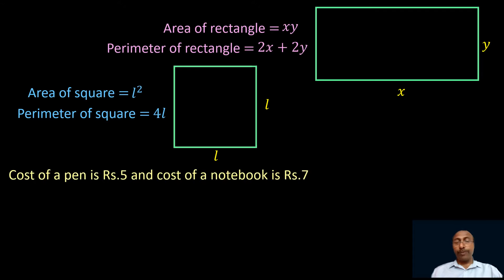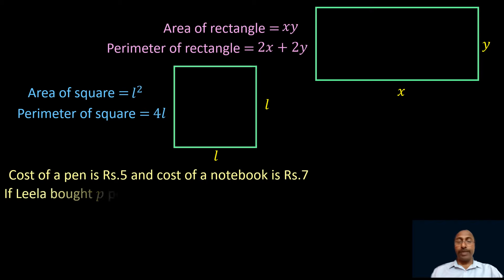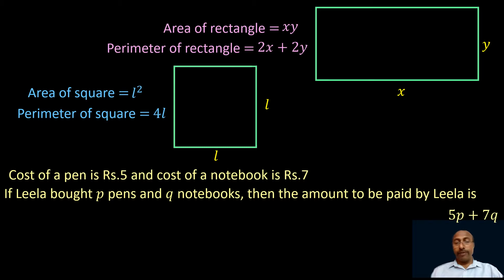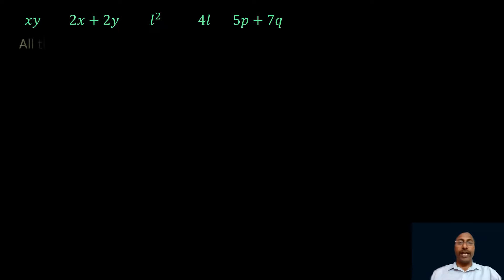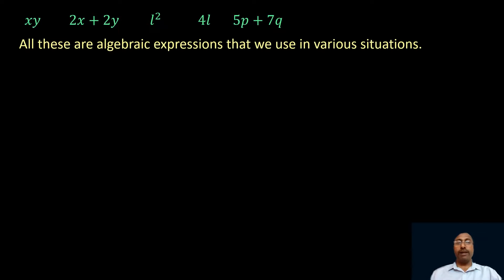If the cost of a pen is 5 rupees and the cost of a notebook is 7 rupees, and Lila bought P pens and Q notebooks, then the amount to be paid by Lila is 5P plus 7Q. So here, xy, 2x plus 2y, L square, 4L, and 5P plus 7Q are all algebraic expressions that we use in various situations.